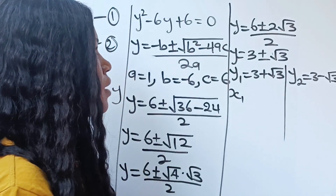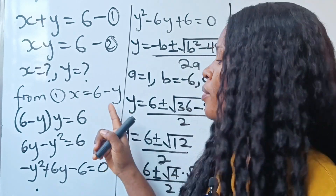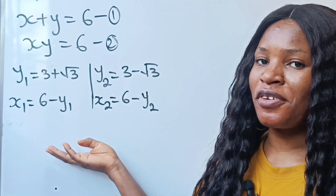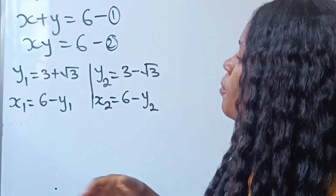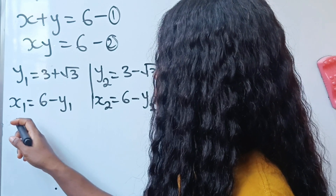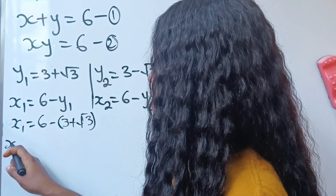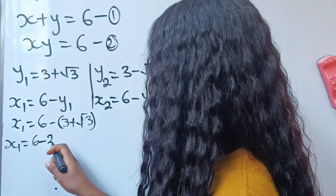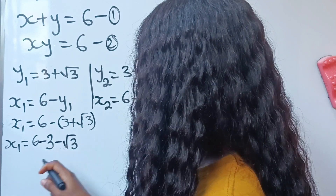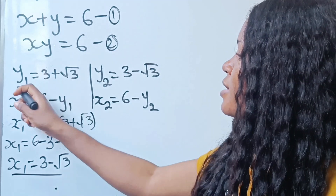Since y1 is known, how do we get x1? We said that x equals 6 minus y, so x1 equals 6 minus y1. Since y1 is 3 plus root 3, x1 equals 6 minus 3 plus root 3. That gives us 6 minus 3, which is 3, minus root 3. So x1 equals 3 minus root 3.